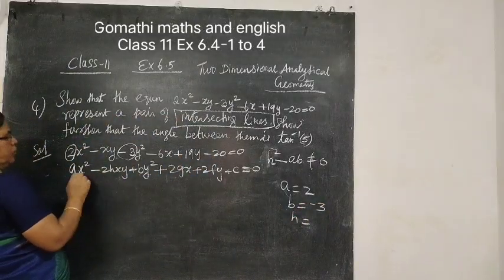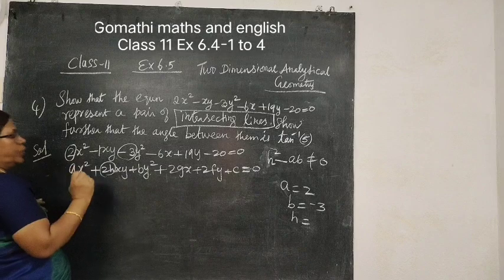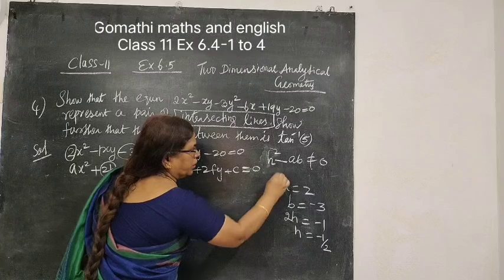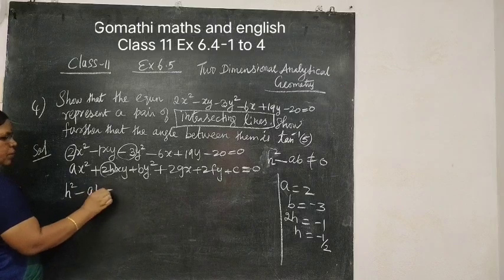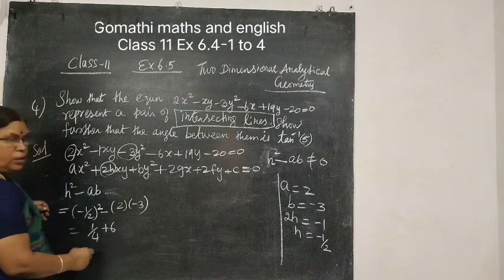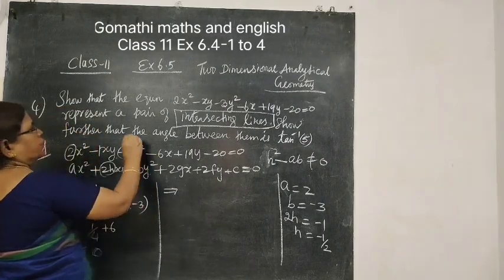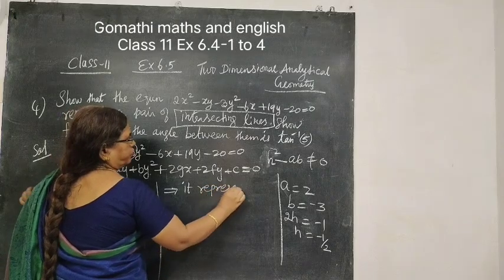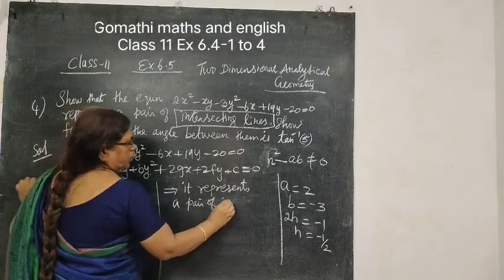Then H. Here 2H is coefficient of XY, so 2H is minus 1. Therefore H equal to minus 1 by 2. So H squared is 1 by 4, AB is 2 times minus 3 equals minus 6. So 1 by 4 minus minus 6 is not equal to 0. Which implies the equation represents a pair of intersecting lines.